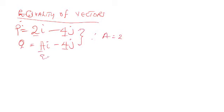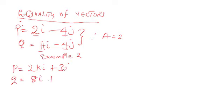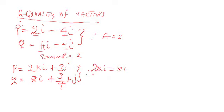Now for Example 2, if we have vector p equal to 2ki plus 3j, and vector q equal to 8i plus (3/4k)j, for these two vectors to be equal we equate the i-component and the j-component separately. Looking at the i-component: 2k must equal 8, so k equals 8 over 2, which equals 4.